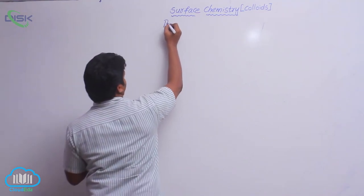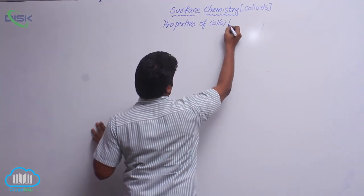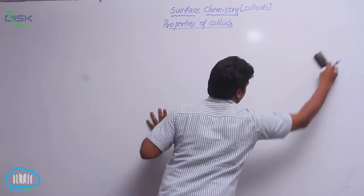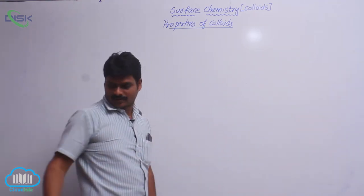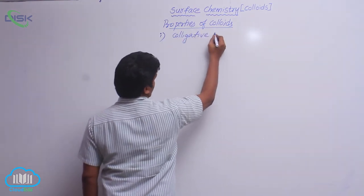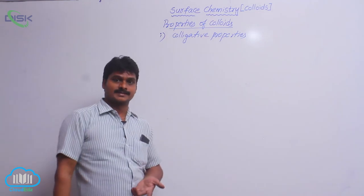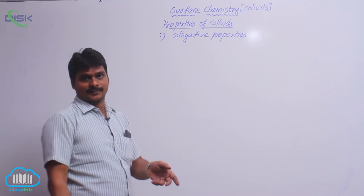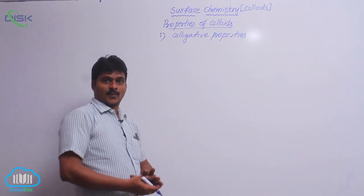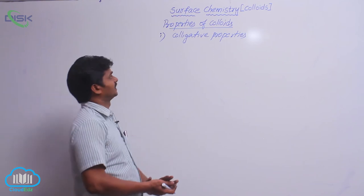Let us see properties of colloids one by one. First one: colligative properties. Already in solutions I have discussed, what are colligative properties? The properties of dilute solutions which depend only on the number of solute particles, but not on the nature of solute, are said to be colligative properties.